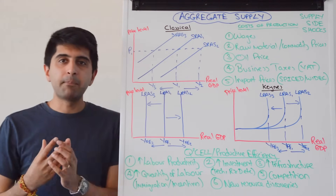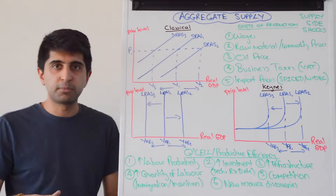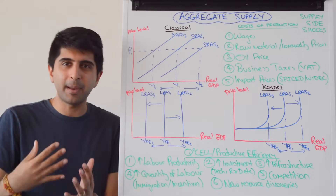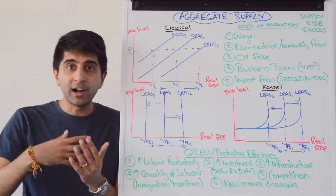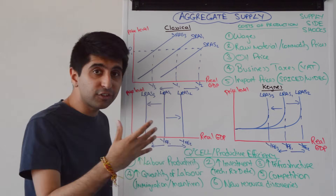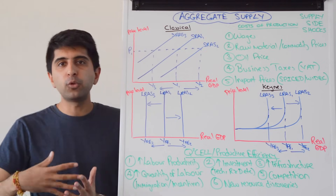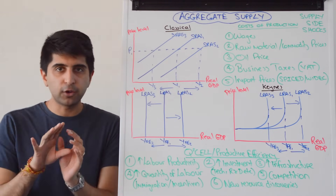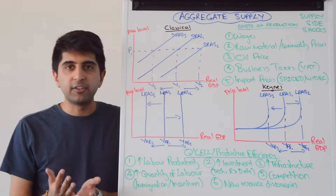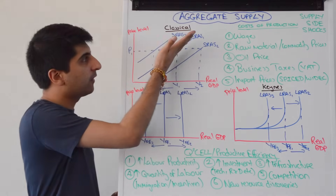Business taxes like VAT clearly impact costs of production. If VAT goes up, that will increase costs of production; if VAT goes down, that will reduce costs for all firms, shifting SRAS whichever way. Don't forget import prices — especially for UK firms that rely on imports of raw materials and commodities. Import prices change when the exchange rate changes. When there is a strong exchange rate, imports are cheaper, so firms who import raw materials will see a drop in costs and SRAS will shift right. With a weak exchange rate, import prices become more expensive, increasing cost of production and shifting SRAS to the left.